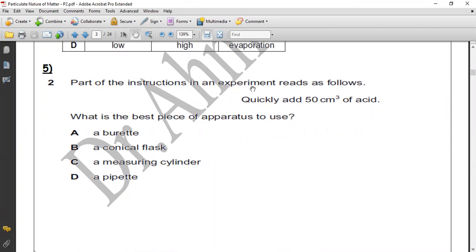Question five. Part of instructions in an experiment reads the following: quickly add 50 centimeter cubed of acid. What is the best piece of apparatus to use? Note that it says quickly. So we cannot use conical flask, we cannot use burette, we cannot use pipette. Why we cannot use burette? Because it drops the sample drop-wise. Also pipette measures the sample drop-wise, but we need it quickly, not drop-wise. So the correct answer will be measuring cylinder.